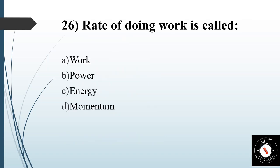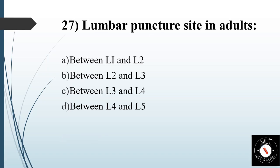Twenty-sixth question. Rate of doing work is called. Option A: Work. Option B: Power. Option C: Energy. Option D: Momentum. Answer is Option B: Power.